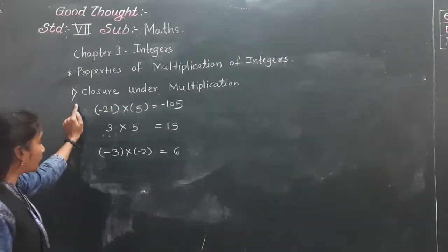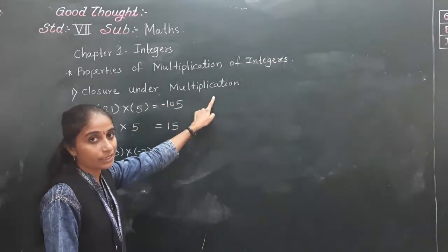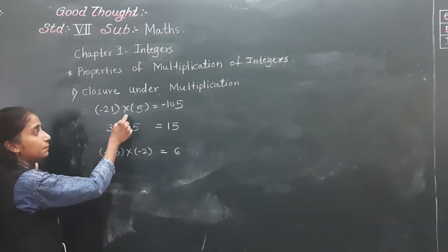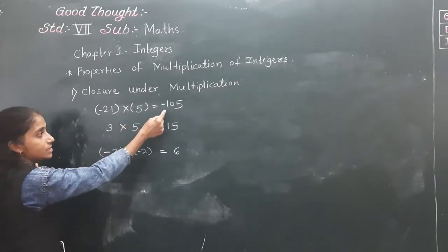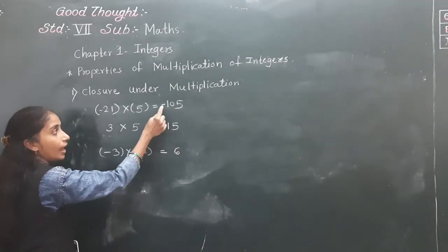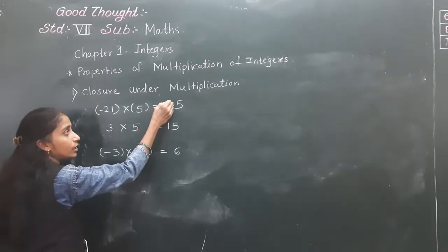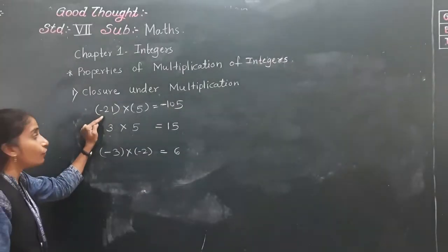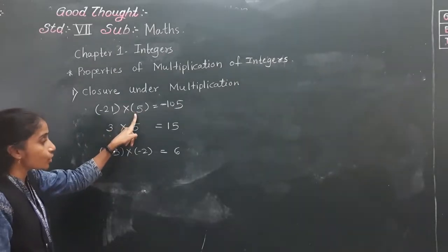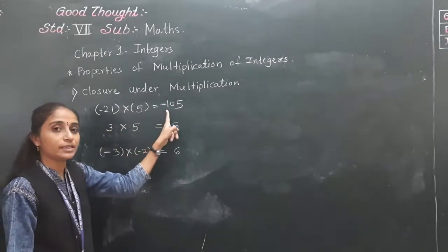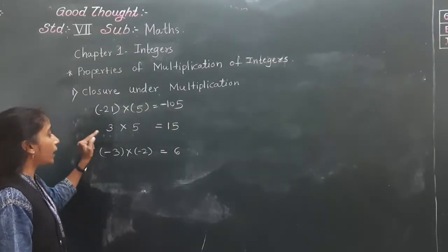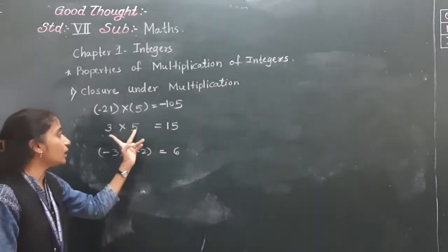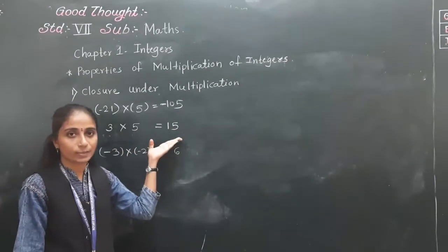First property: closure under multiplication. For example, minus 21 multiplied by 5 — 21 fives are 105, and the answer carries a negative sign because one number is negative and the other is positive, so the product is negative. Next, 3 into 5 equals 15 — both numbers are positive, so the answer is positive.